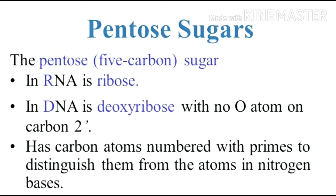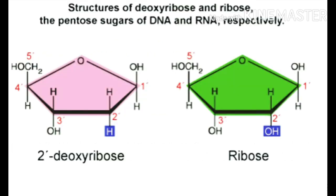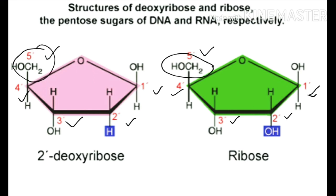The pentose sugars included in DNA and RNA structure are of two types: the first one is deoxyribose sugar and the second is ribose sugar. You can see in the diagram that both structures are almost the same — pentose means the sugar containing five carbons. One carbon is outside the ring and four are included in the ring.